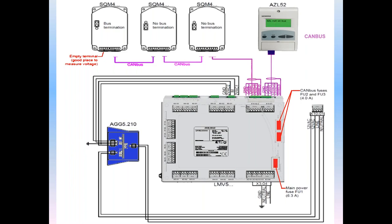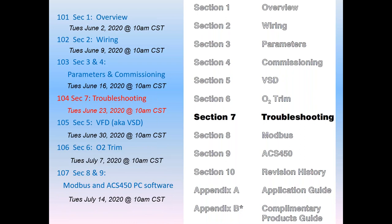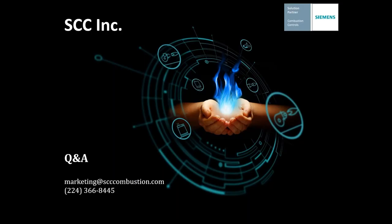That way you can diagnose AZL not on bus CAN faults — it's fully explained in complete detail in the LMV5 manual. I hope this has given you some comfort in taking the diagnostic codes, the wiring diagrams, and the parameter sections and using them all together. This completes section 104 troubleshooting. Join us again for future sessions on the VFD, the O2 trim, and the PC software. I'll send the presentation back to Aaron and we'll do questions and answers. Thank you.